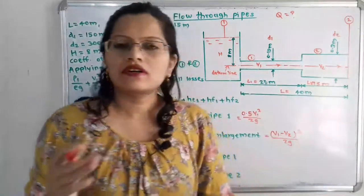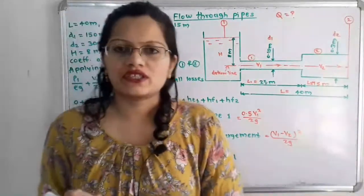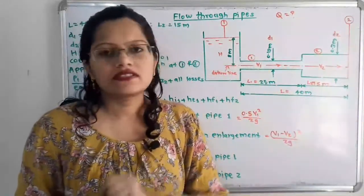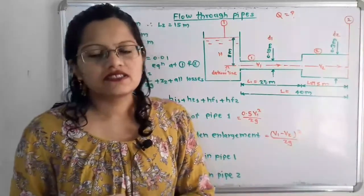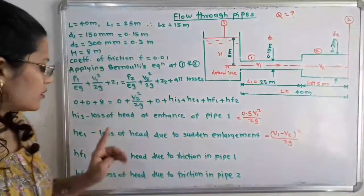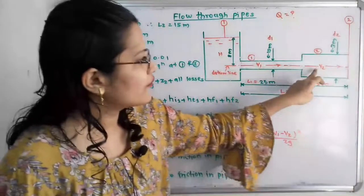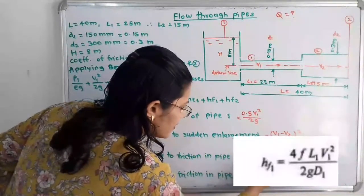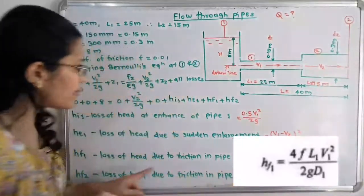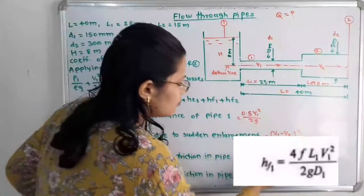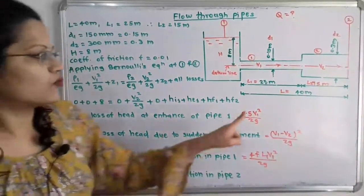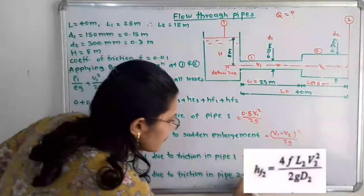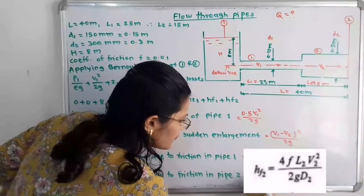Now we consider the major losses, which are friction losses. When water flows through the pipe it is in contact with the pipe surface, creating resistance and energy loss. The loss of head due to friction in pipe 1 is HF1 = 4FL1V1²/2g, where L equals L1 and velocity equals V1. Similarly, HF2 = 4FL2V2²/2g for pipe 2 with length L2 and velocity V2.